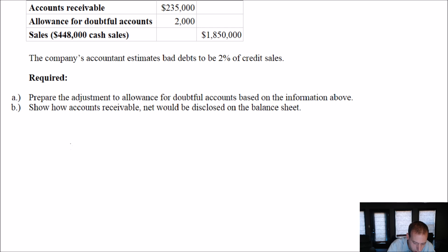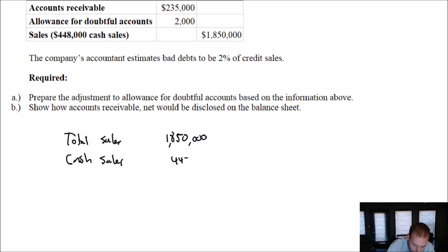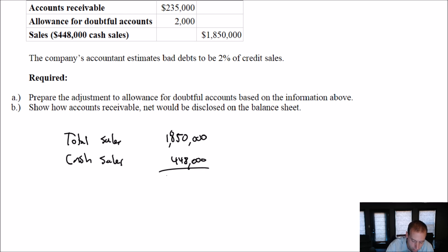So 2% of credit sales — what are our credit sales? We know our total sales are $1,850,000 and our cash sales are $448,000. If our overall sales are $1.85 million and cash sales are $448,000, our credit sales have got to be the rest. If I just deduct one from the other, you'll find it's $1,402,000. That's our credit sales.